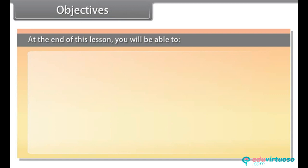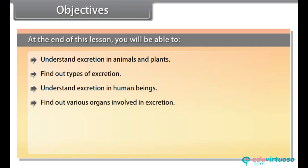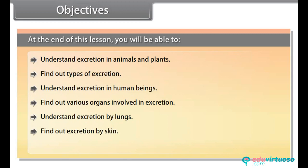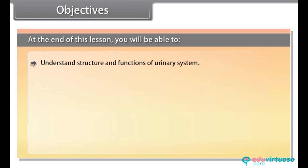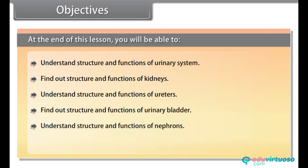At the end of this lesson, you'll be able to: understand excretion in animals and plants; find out types of excretion; understand excretion in human beings; find out various organs involved in excretion; understand excretion by lungs, skin, and large intestine; understand the structure and functions of the urinary system, kidneys, ureters, urinary bladder, nephrons; and study about artificial kidney or haemodialysis.